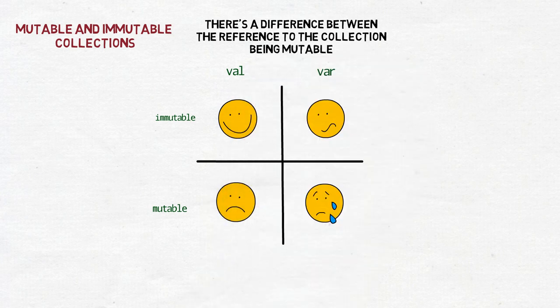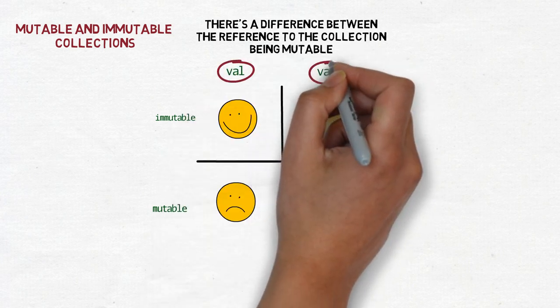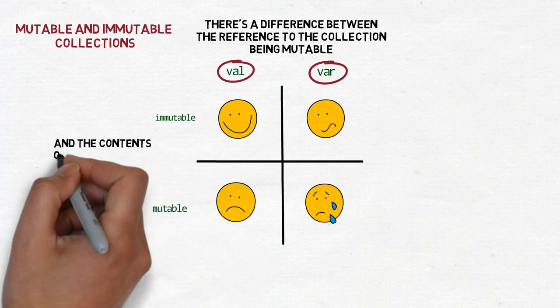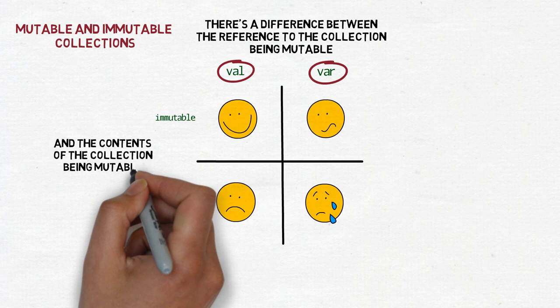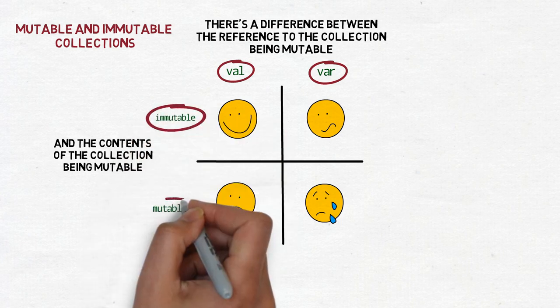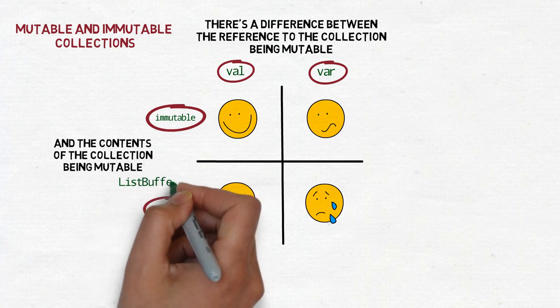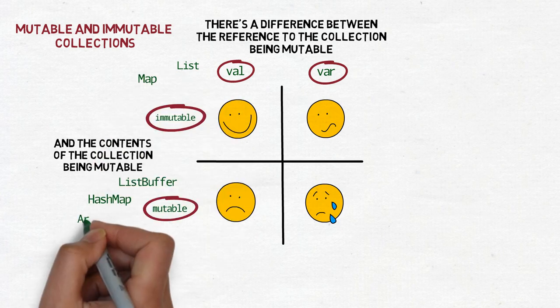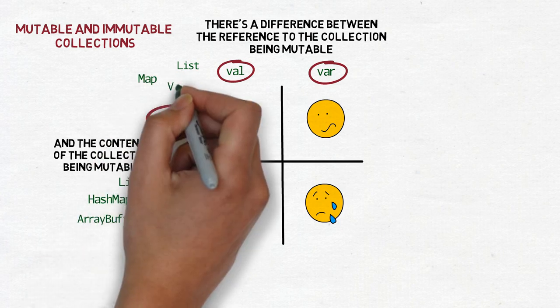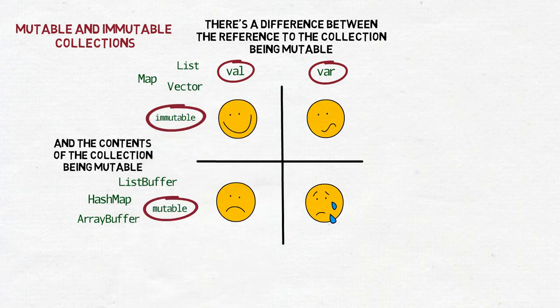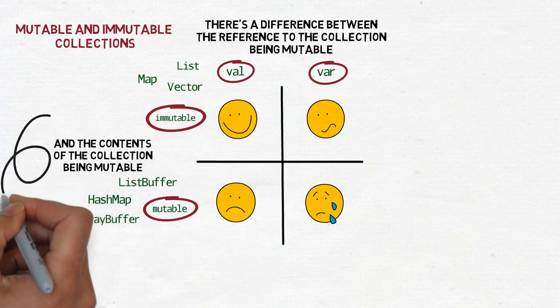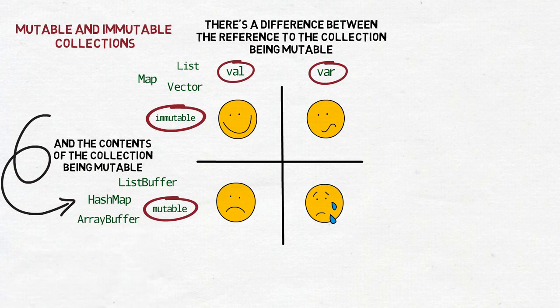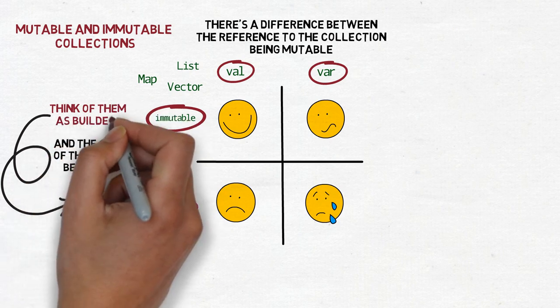On one hand, this may sometimes lead to suboptimal performance. What if you just want to replace one element in the collection? Do you need to copy all the other elements to the new one? Well, that's why you can also use mutable counterparts of each collection, such as mutable list buffer for list, mutable hash map for map, or mutable array buffer for vector. They are what you see in the left bottom corner of the chart. You keep such a mutable collection as a val because you don't want to replace the reference to it after you assign it, but its contents are mutable. Think of it as a builder.